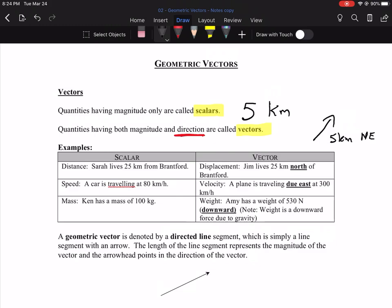So here's an example. Sarah lives 25 kilometers from Brantford would be a scalar. And then Jim lives 25 kilometers north of Brantford. That's a very different thing, but a vector.